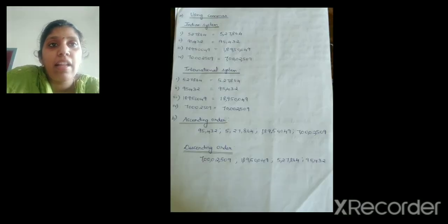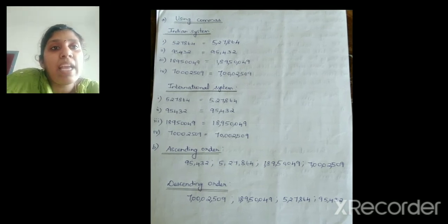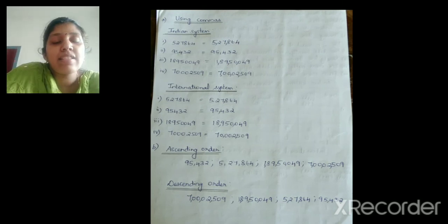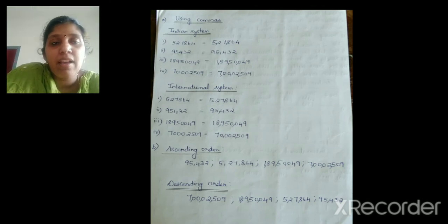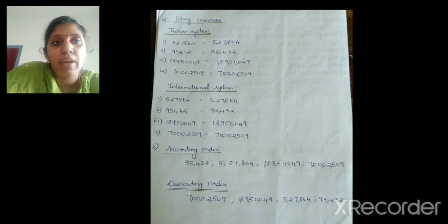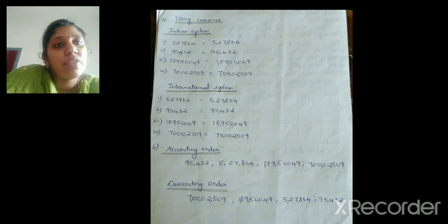Now, using commas, we have to write in Indian system and international system. In Indian system, starting from the ones place, after three digits we place a comma, then a comma before every two digits — because thousands and ten thousands belong to one period. In international system, we place a comma before every three digits, as three numbers belong to one period.